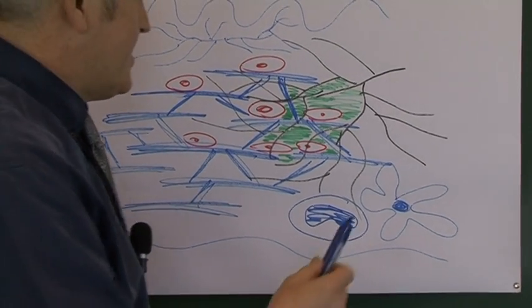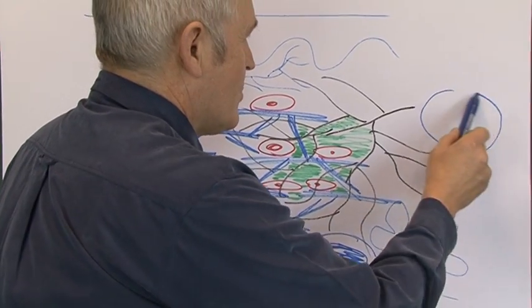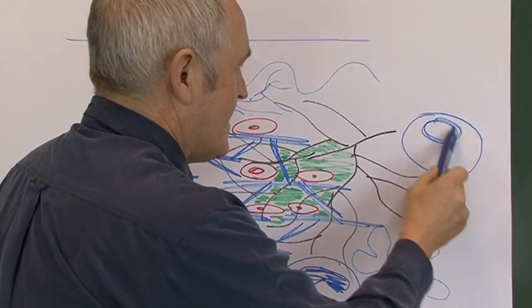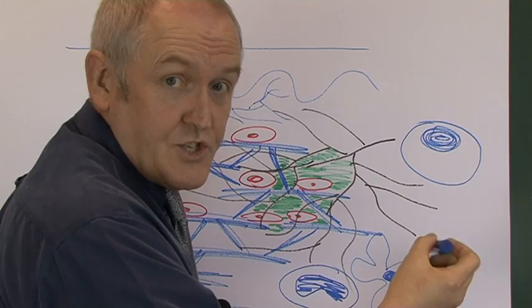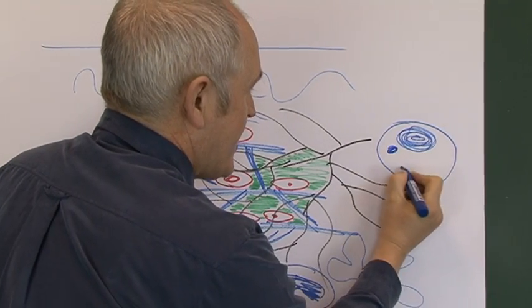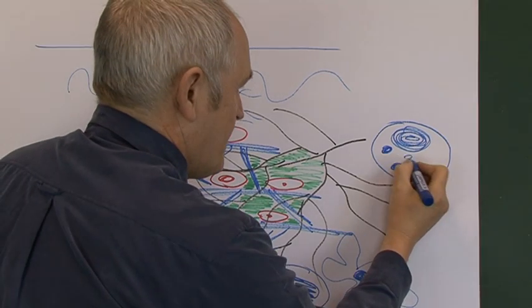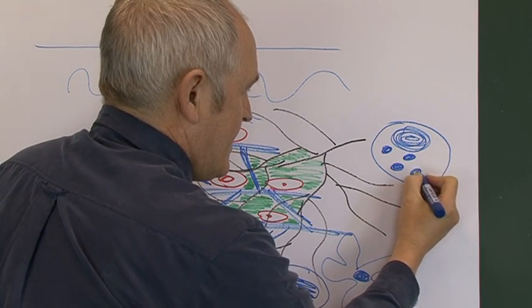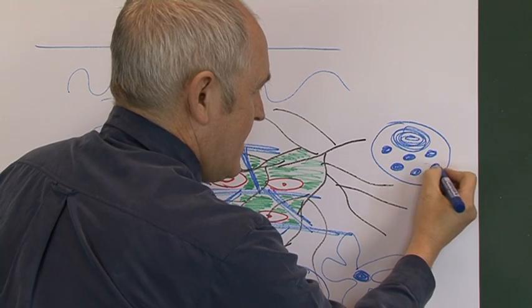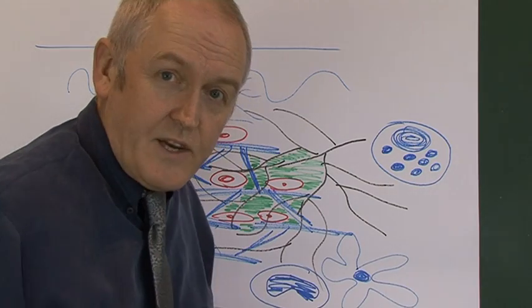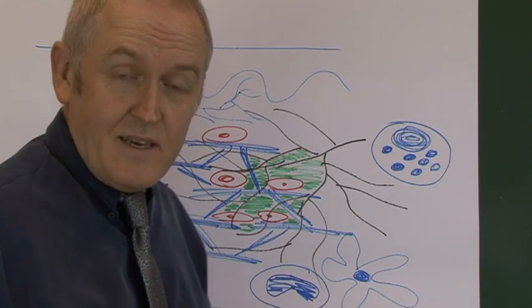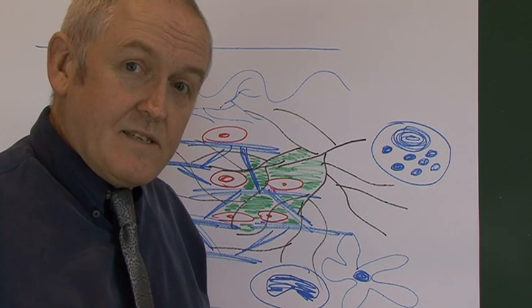And also in the dermis there's another type of cell called a mast cell. And mast cells have a large nucleus and they have dark staining large granules in them as well. And these large dark granules contain histamine and other inflammatory mediators.